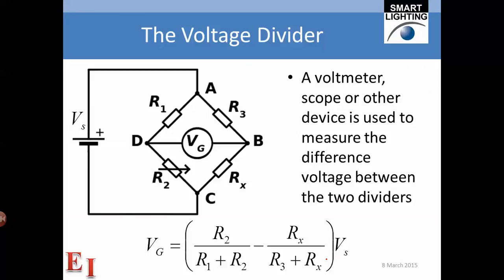If we go through the math where we just look at the two different voltage dividers, we've got the one on the left and the one on the right, and we take the difference between them, we end up with this, the expression for the output voltage of the Wheatstone bridge.